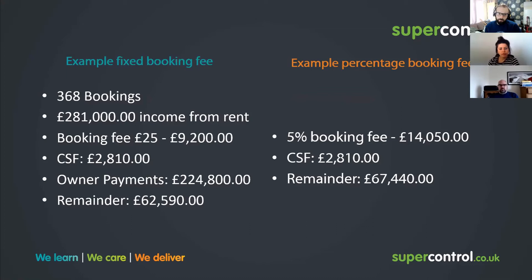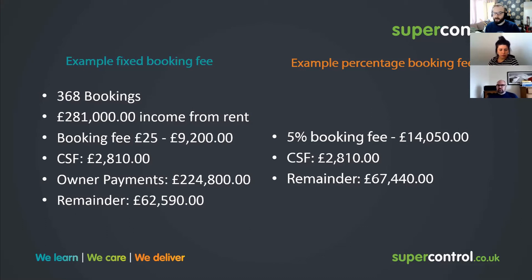This example assumes half your bookings are from channels — we know that's not the case for everybody, but it's just an example. So that's £281k income from rent, and the booking fee is on top of that. The channel service fee is on rent, not on the booking fee — we only charge a channel service fee on what's in your price planner, which would be £2.8k. Once you take off owner payments you've got a remainder of £62,590. If you were charging a 5% booking fee instead of a £25 fixed fee, your remainder would be £67k, which covers your channel service fee and more.